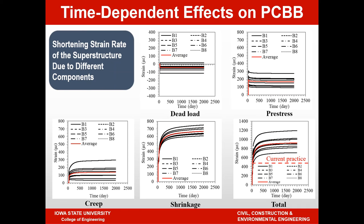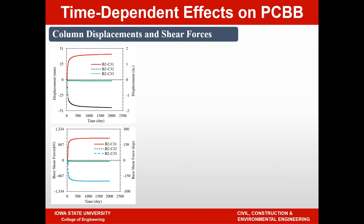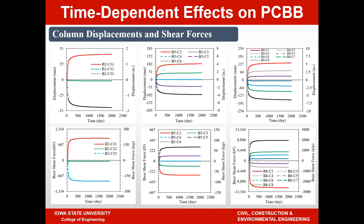Looking at the column displacement and shear forces: the extreme columns typically see much larger forces than intermediate columns. For the B2, B5, and B8 bridges, the top displacements and base shear forces are clearly not constant between columns. As you get closer to the center, some columns experience very small forces and may not even experience cracking, whereas extreme columns may experience cracking in a matter of days.